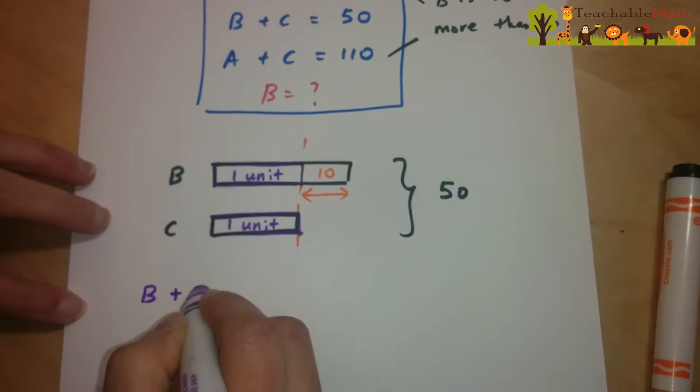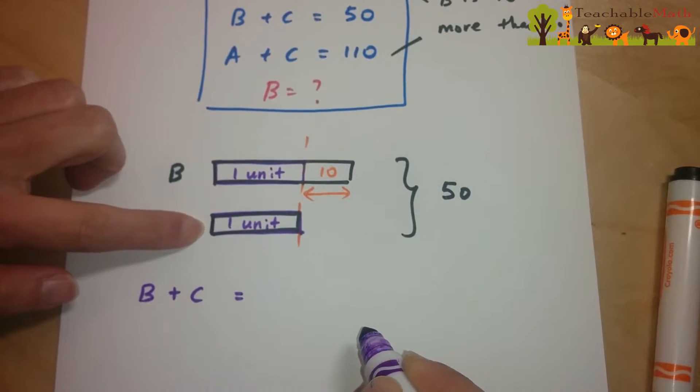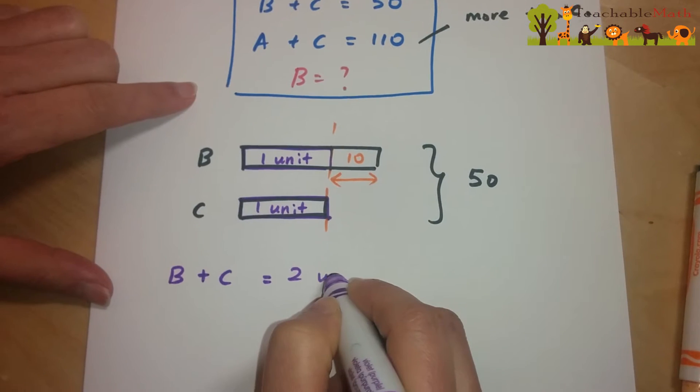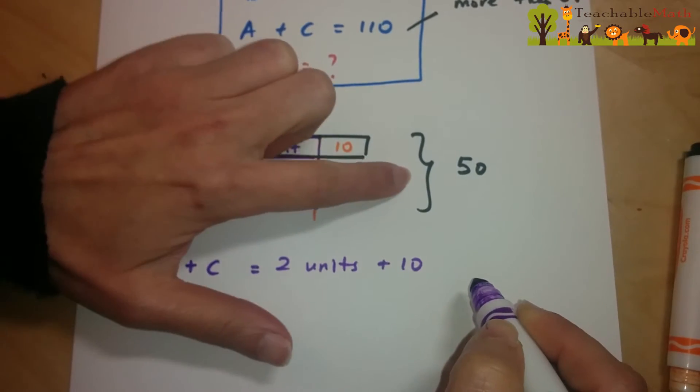B plus C. B plus C is one unit plus one unit plus 10. It equals 50.